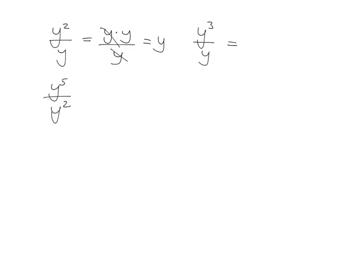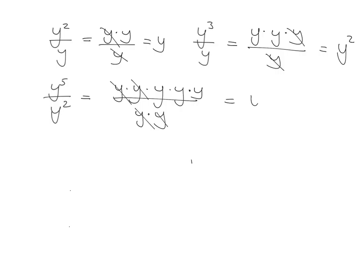Here you've got y cubed which means y times y times y, and at the bottom just a y. Cancel and you're left with y squared. Here you've got 5 y's multiplied together, so it's 5 of them, and at the bottom 2. So cancel and you're left with y cubed.